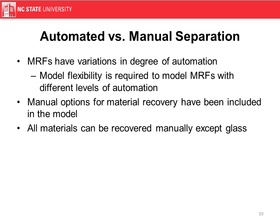We understand there's a difference between an automated MRF and a manual MRF, and that the level of automation varies tremendously across the industry. So we've tried to make a flexible model that can incorporate facilities that are completely automated and some that are far less automated with a lot more manual separation. Each material except for glass has an option to be recovered manually, not recovered at all, or recovered via automated equipment. We haven't included manual separation for glass because it's uncommon and often endangers the health of the pickers.